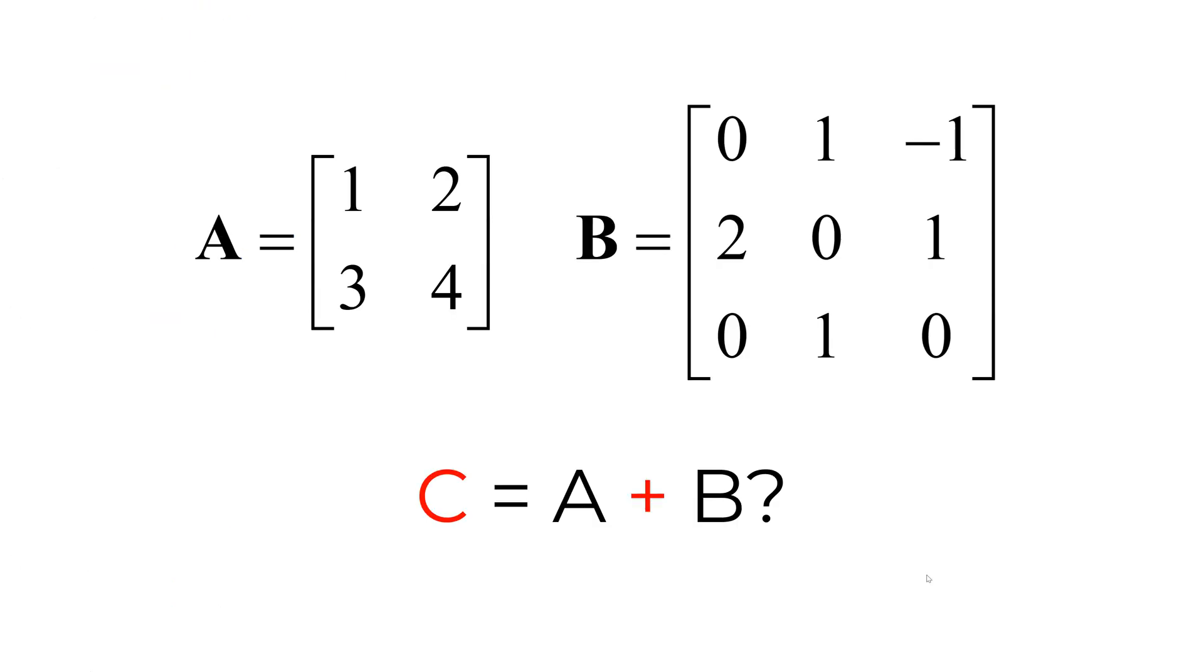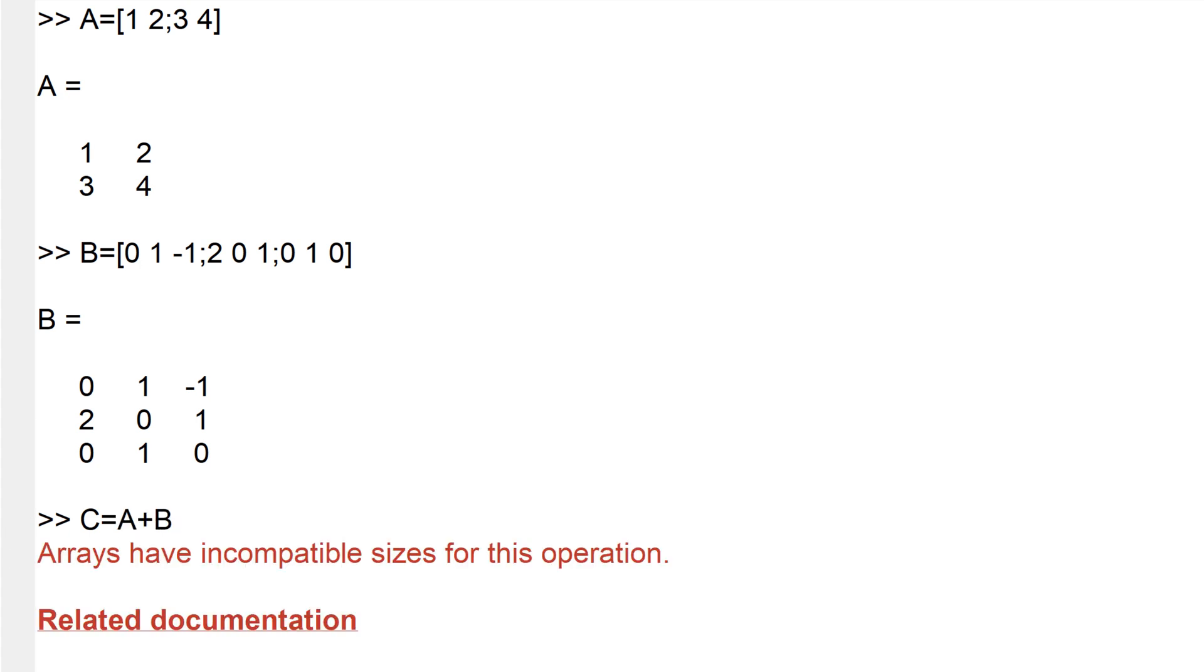What if you want to add two matrices A and B having different size? For example, two-by-two matrix plus three-by-three matrix. So, I have matrix 1, 2, 3, and 4. B equals 0, 1, minus 1, 2, 0, 1, 0, 1, 0. When you create two matrices, C equals A plus B, you can see the error message saying that the matrix size does not match for matrix addition.